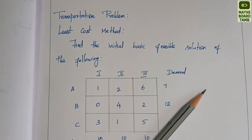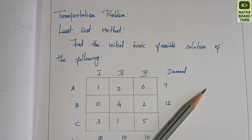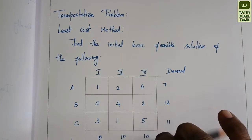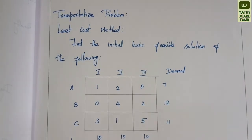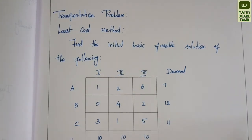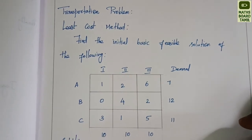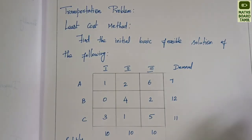Welcome to MaxBoard Tamil. Let's talk about the transportation problem. There are three methods. Let's talk about the least cost method. The least cost method is very economical compared to the north-west corner rule. That is the first method. The least cost method is the best method.